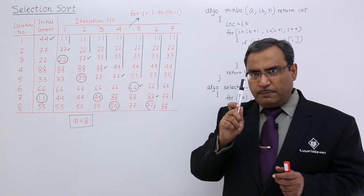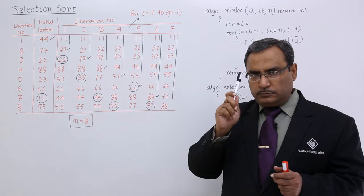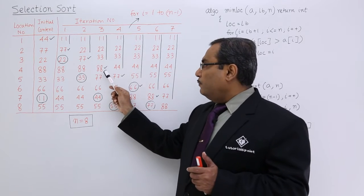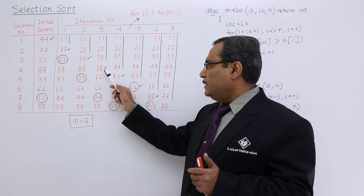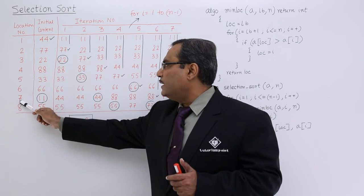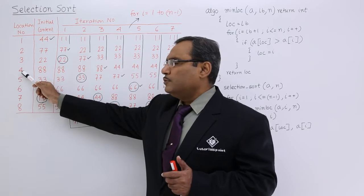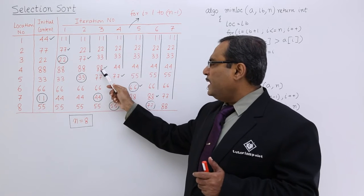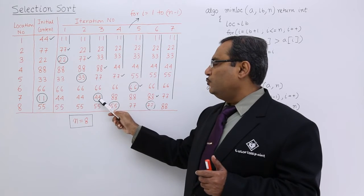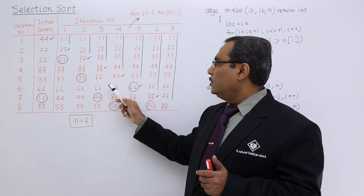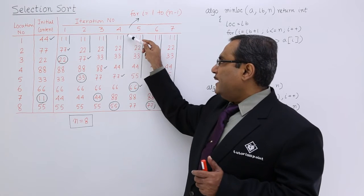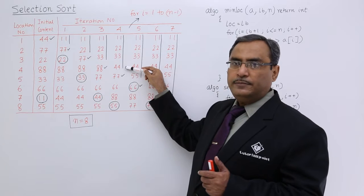Now I am trying to find out the minimum data location number from 4 to 8. What is the minimum data? 44. What is the location number? 7. Is 7 equal to 4? No. So whatever we are having at this particular fourth place will be swapped with the seventh place data. So 44 and 88 have been swapped, and the array has been sorted up to this limit.